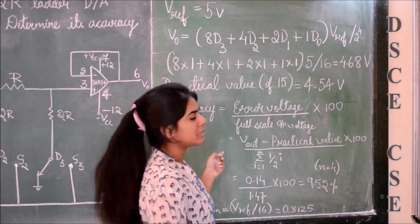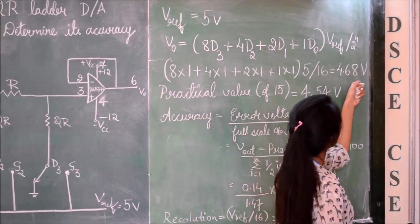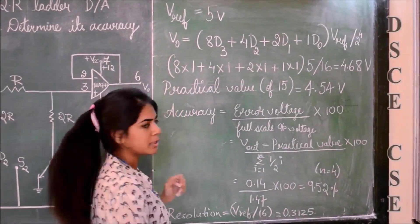Substituting the value of D3, D2, D1, D0, we get the value 4.68 volts. This is the theoretical value that we have got.